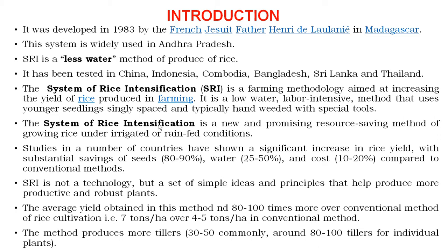The main aims of the SRI method are: use of less water, less labor, and less seed. Mostly young seedlings are used — only one seedling per hill for transplanting. For weed management in SRI, hand weeding or special tools are used. SRI is a new and promising resource-saving method of growing rice under irrigated and rain-fed conditions.